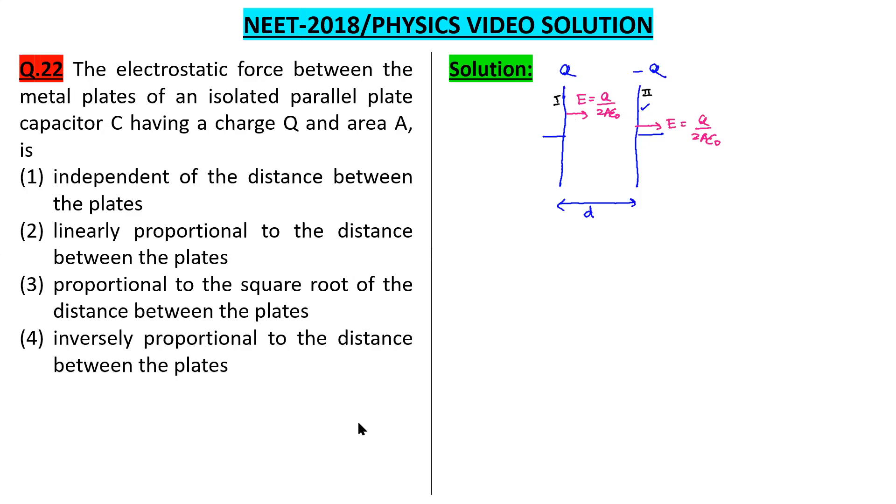We know that a charged plate in an electric field experiences a force F. F is equal to QE. So this plate 1 which has a charge Q placed in electric field E will experience an attractive force F in this direction. This F will be Q into Q upon 2A epsilon 0.